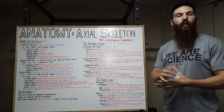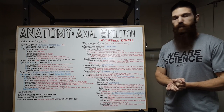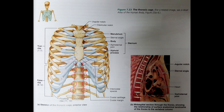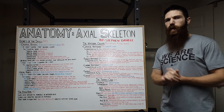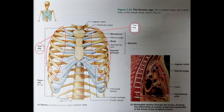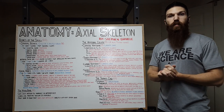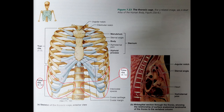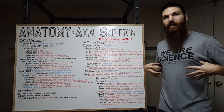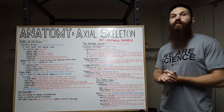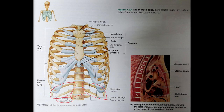Lastly, we have our ribs. We have 12 pairs of ribs — 12 on each side, making 24 total ribs. All of our ribs attach to our thoracic vertebrae and they curve inferiorly towards our sternum. Ribs 1 through 7 are considered our true ribs, also known as vertebrosternal ribs, because they attach directly to our sternum. Ribs 8 through 12 are our false ribs — they attach indirectly to the sternum or entirely lack a sternal attachment. False ribs can be subdivided into vertebrochondral ribs (ribs 8 through 10), which attach to the sternum via the costal cartilages, and finally ribs 11 and 12, our floating ribs — also known as vertebral ribs — because they have no anterior attachments.